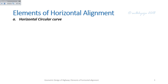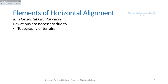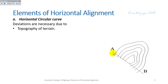First, horizontal circular curves. Curves are necessary due to different obligatory points. There are two types of obligatory points: positive obligatory points and negative obligatory points. One example is topography of terrain. In this figure, we have to align the road from A to B, but due to the topography, if we align the road directly from A to B there is a high cut or fill needed, so we have to follow the control line to align the road from A to B.